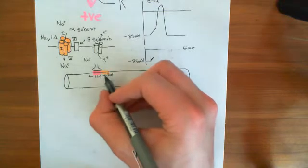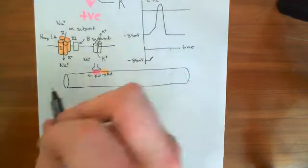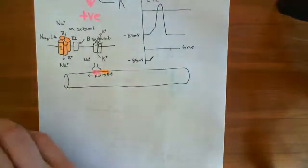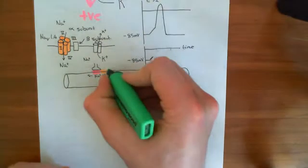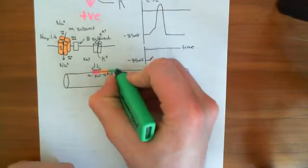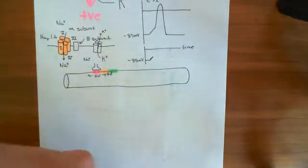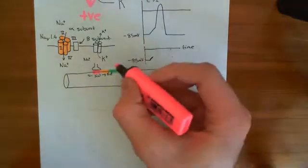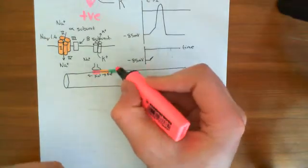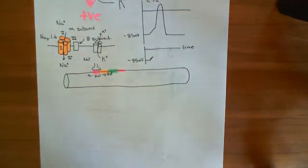That will allow sodium to come in here, and then that sodium will diffuse to the neighbouring portions of membrane afterwards. So you'll get sodium diffusing into this next portion of the membrane, and this portion will then undergo an action potential. And in this way, the action potential propagates along the sarcolemma.